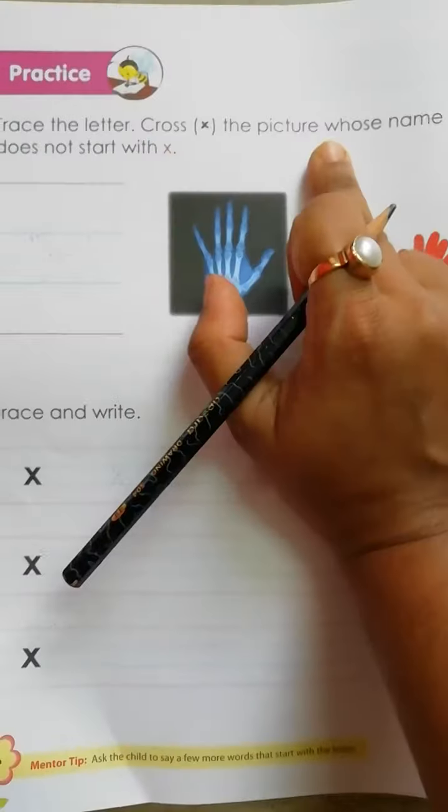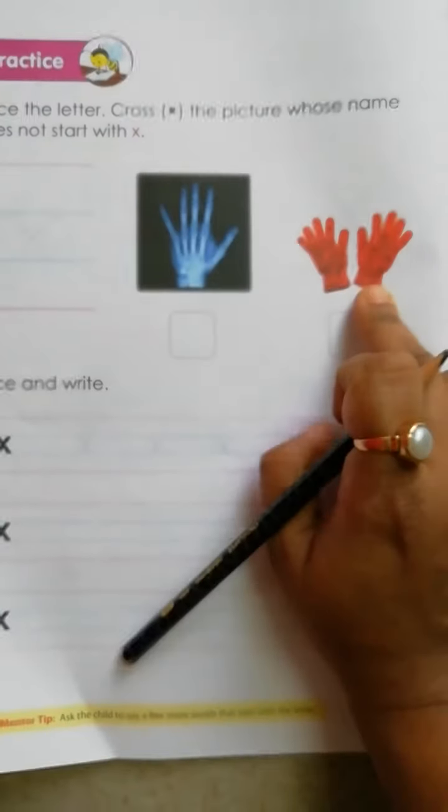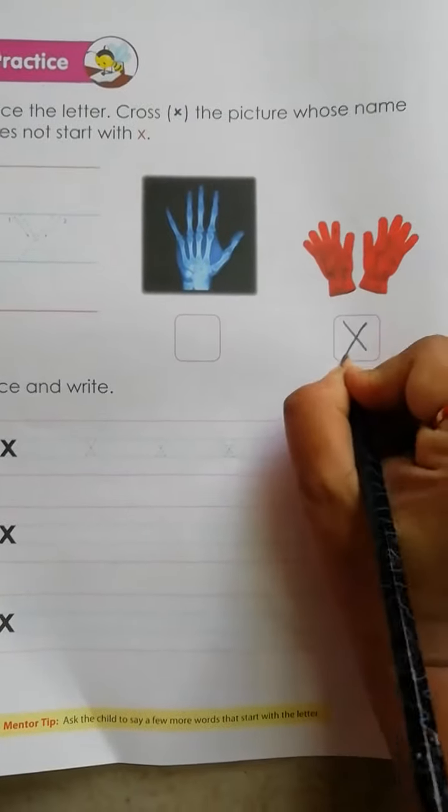Now cross the picture whose name does not start with x. X for x-ray, X for gloves, no. So cross this.